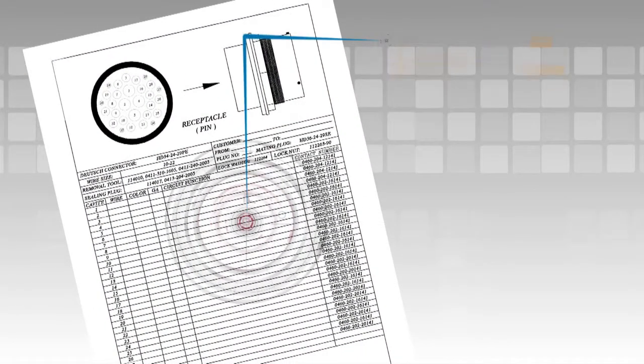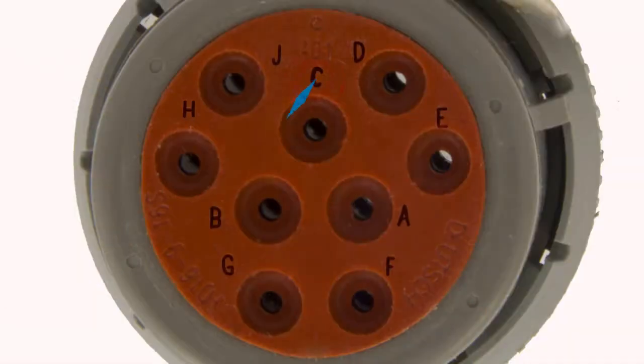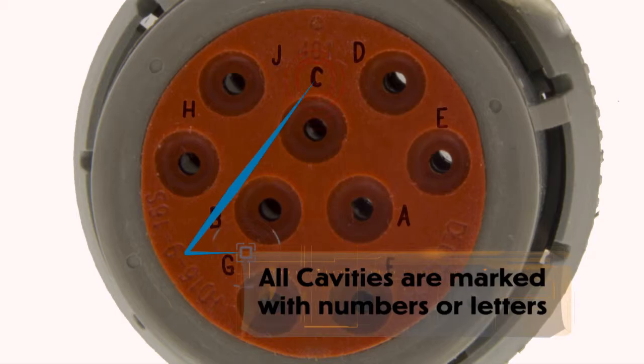Refer to your wiring diagram to know which wire to insert into each cavity. All cavities are marked with numbers or letters, depending on the design.